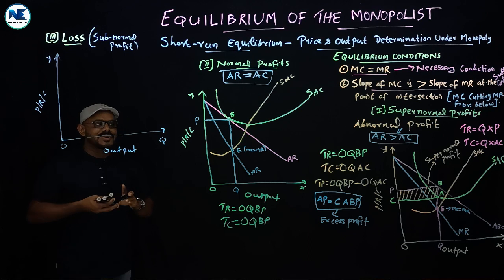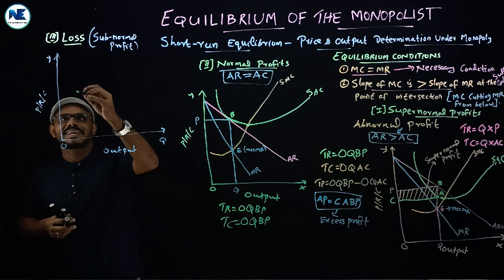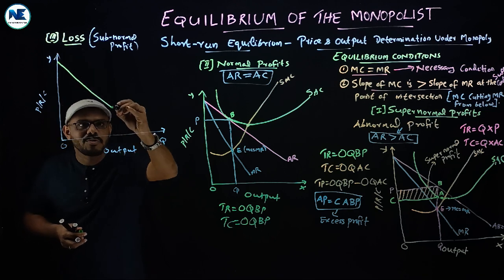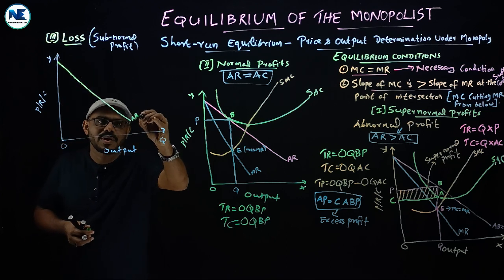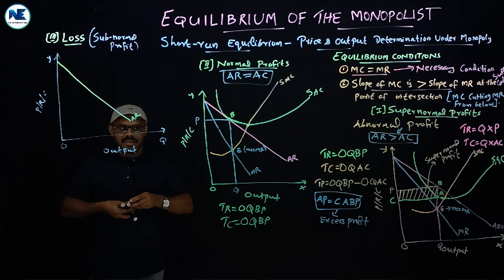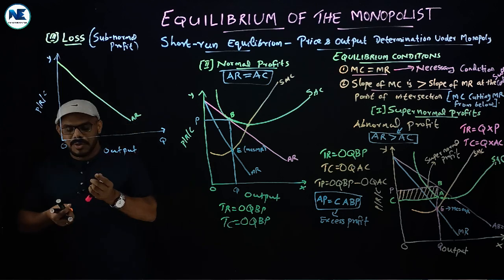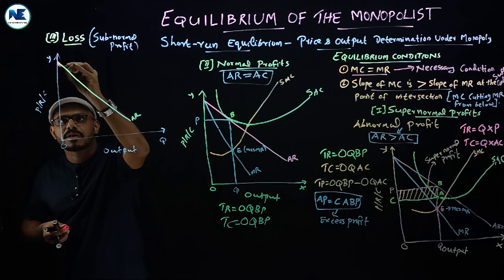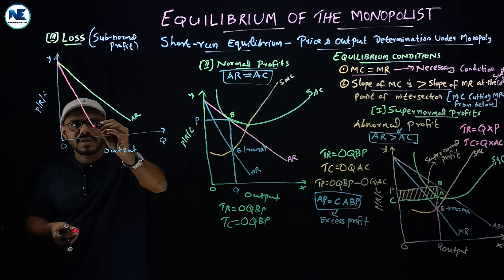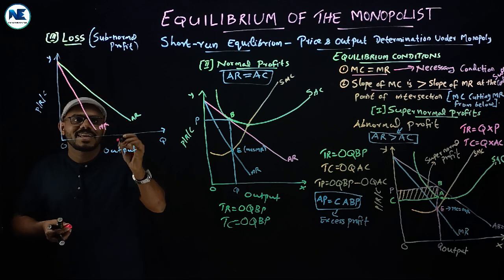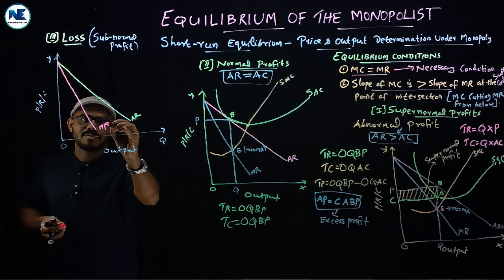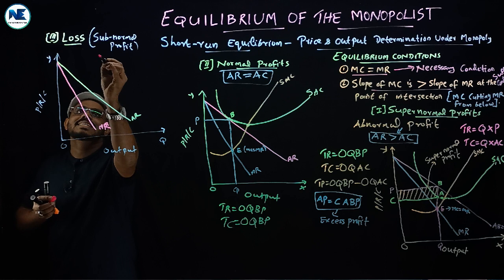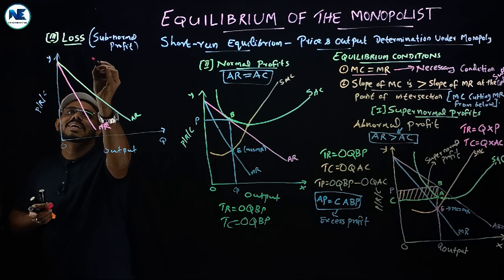What is the logic here? First, draw a downward sloping average revenue curve. Then, after that, draw the marginal revenue, which is less than average revenue. This is the marginal revenue curve.